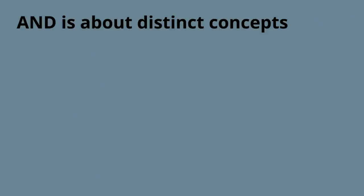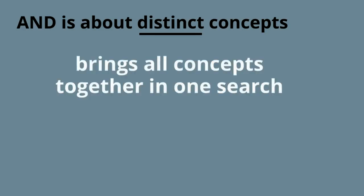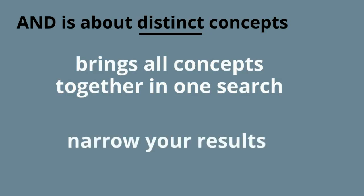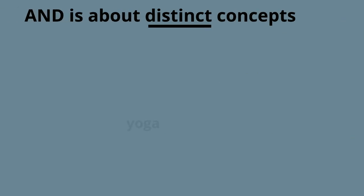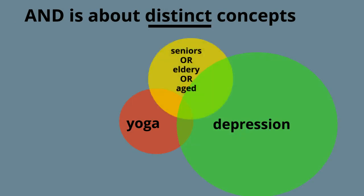AND is the most commonly used Boolean operator, used all the time in advanced keyword searches. The two main reasons to use AND are to make sure that all your core concepts are discussed in each book or article, and to limit the number of results — remember, there are millions of books and articles out there. In this complex topic search, yoga generates a small number of results, depression a huge number, and seniors/elderly/aged somewhere in between. By using AND, you will get the prized records that discuss all three concepts, represented by the tiny overlap in the middle of a Venn diagram.